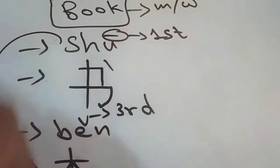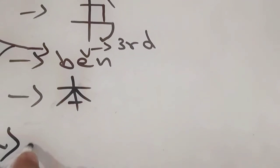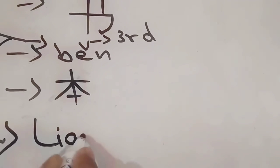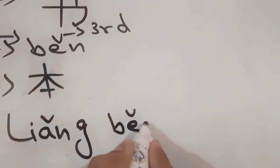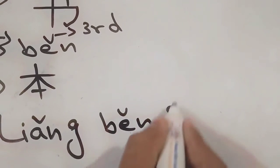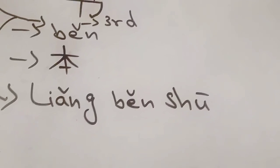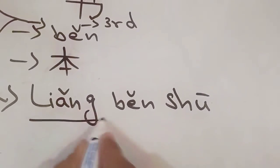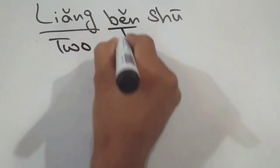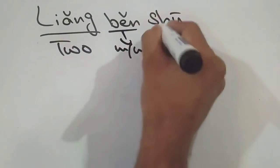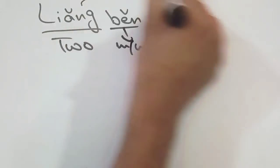With the help of shū and běn, make a single sentence: liǎng běn shū. The word liǎng means two, and běn is a measure word, and shū means book.